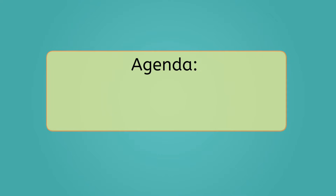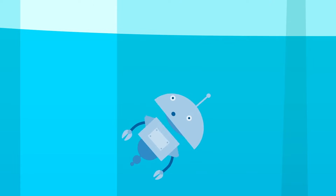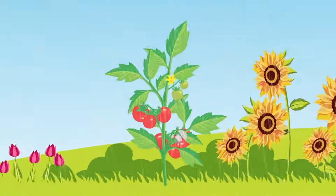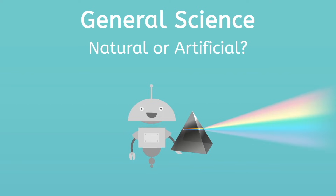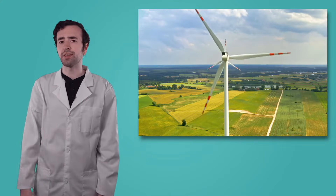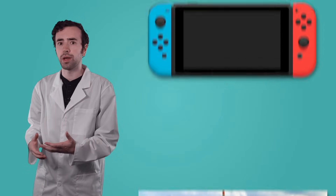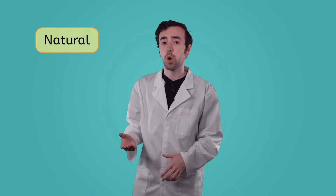But what's a resource? And how do I know if it's natural or artificial? Well, by the end of today's lesson, you'll be able to describe artificial and natural resources and identify examples of each. Let's get into it! Resources can be placed into two categories: natural or artificial.